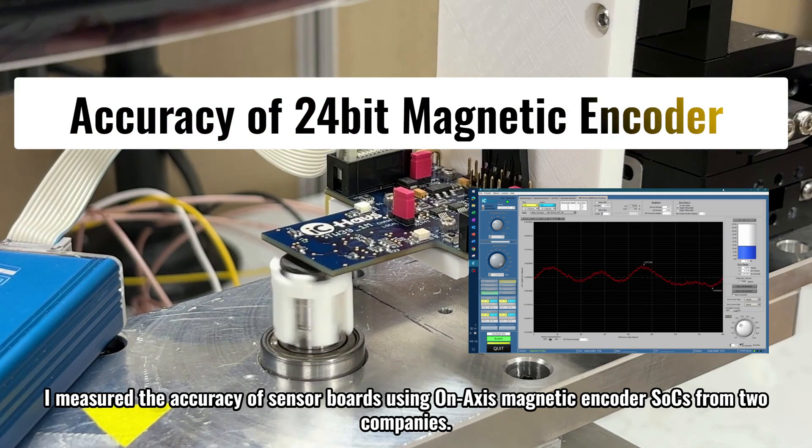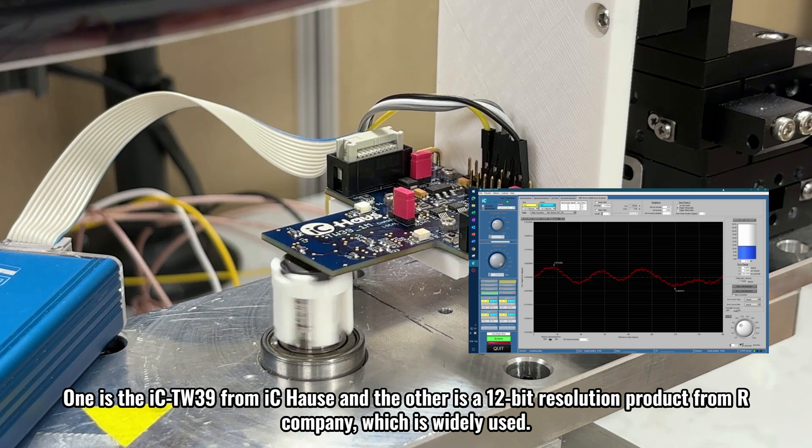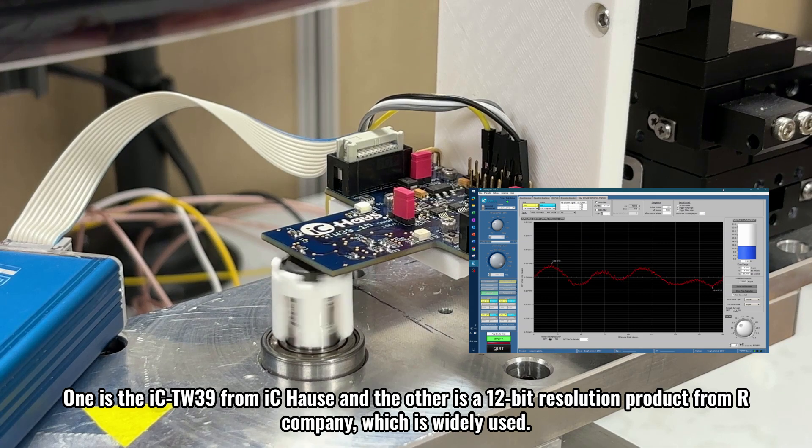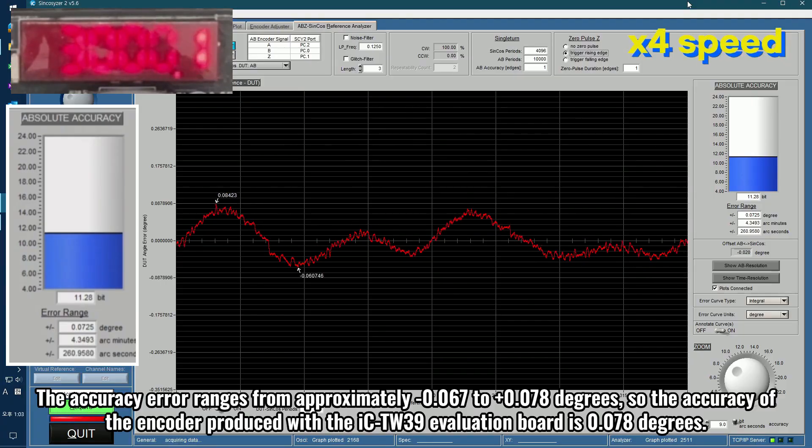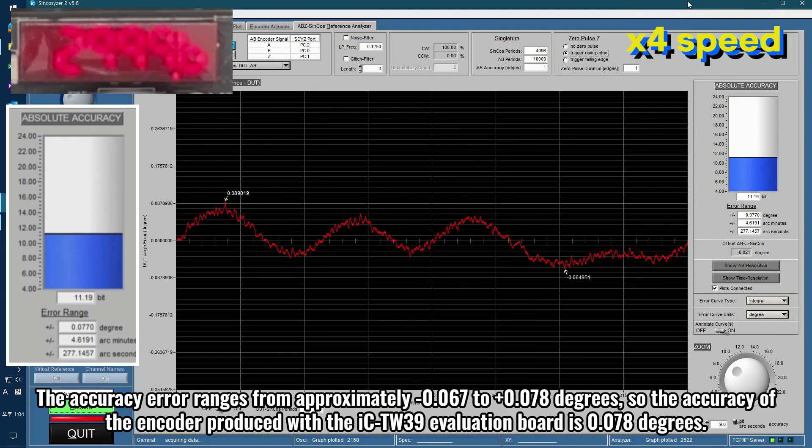I measured the accuracy of sensor boards using on-axis magnetic encoder SOCs from two companies. One is the ICTW39 from IC House and the other is a 12-bit resolution product from our company, which is widely used. The accuracy error ranges from approximately minus 0.067 to plus 0.078 degrees, so the accuracy of the encoder produced with the ICTW39 evaluation board is 0.078 degrees.